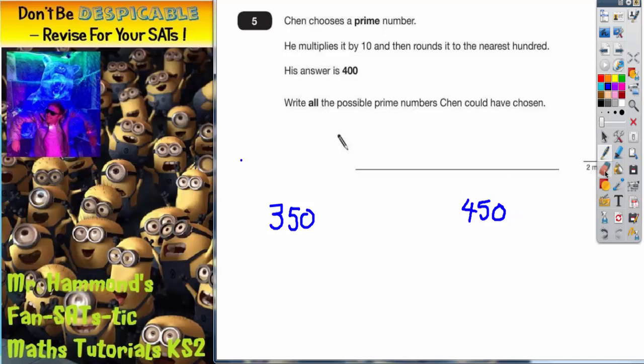Now, 450 would round up to 500, so we're looking for numbers between this. It's got to be more than 350, less than 450. It's got to lie within these numbers.